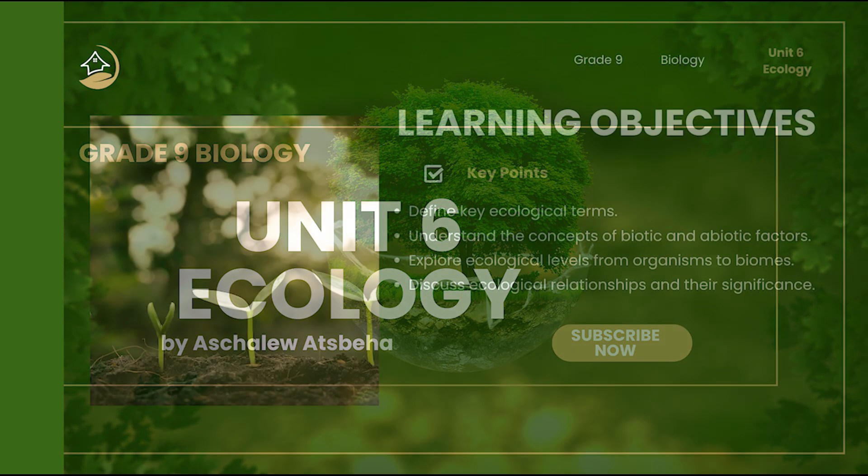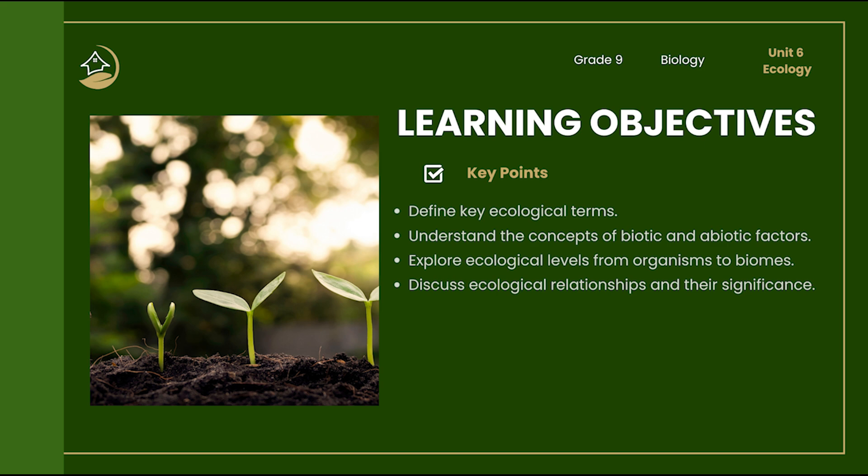By the end of this lesson you should be able to define important ecological terms like ecosystem, population, and community. Identify and explain the roles of biotic or living and abiotic or non-living factors. Understand how life is organized in nature from a single organism to the entire biosphere. Describe different types of ecological relationships and why they matter. Keep these goals in mind as we move through each topic.